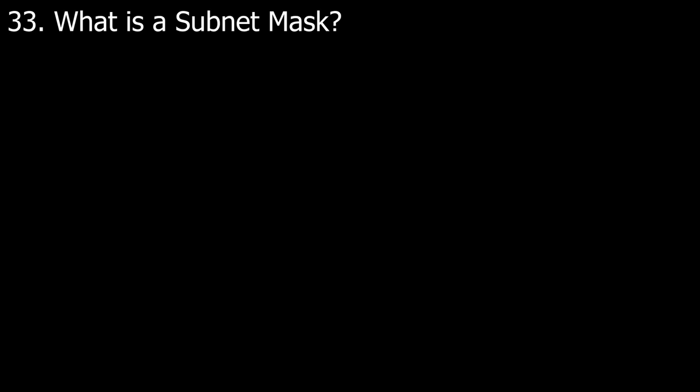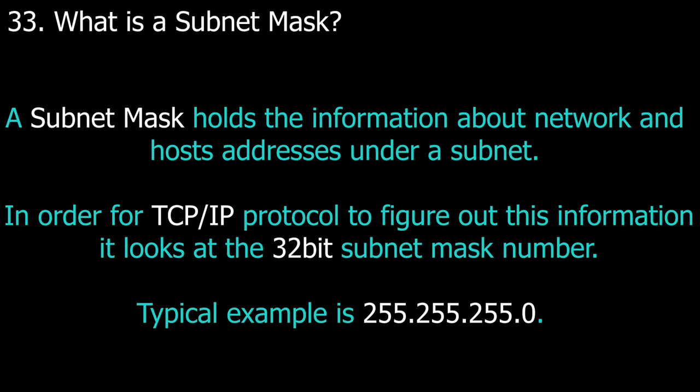Question number thirty-three: what is a subnet mask? A subnet mask holds information about the network and host addresses under a subnet. In order for the TCP/IP protocol to figure out this information, it looks at the 32-bit subnet mask number. A typical example is 255.255.255.0.